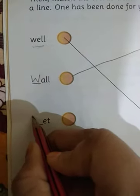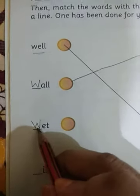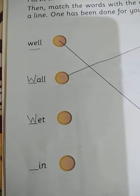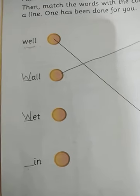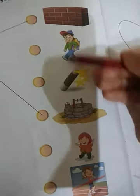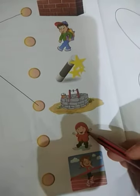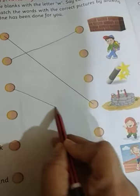Again, fill this blank with writing W. Now, read aloud. W-E-T. Wet. Wet means geela. Now, look here. Look these pictures. Now, tell me who is wet. This girl is wet. So, we have to match it. Match wet like this.